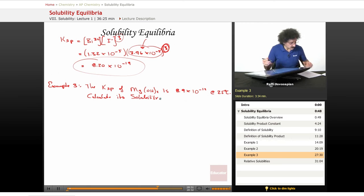Okay, simple enough. Let's write the equation. Magnesium hydroxide, this is chemistry, we have to have an equation.